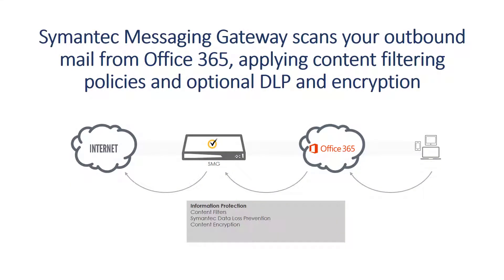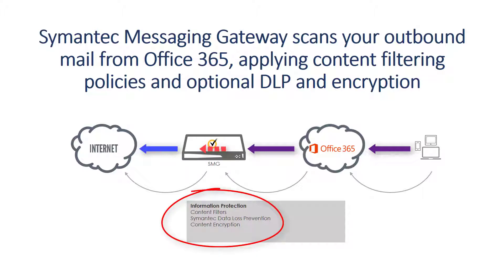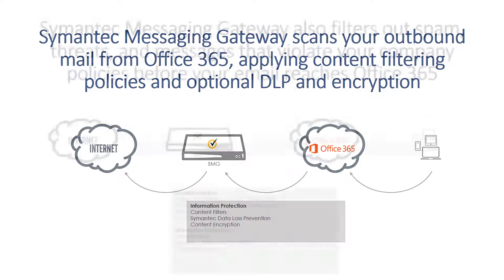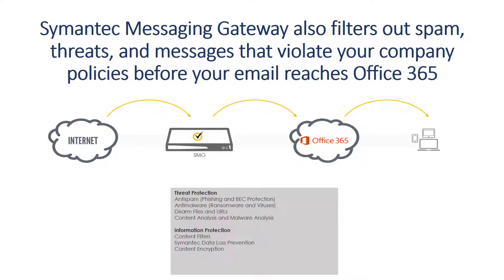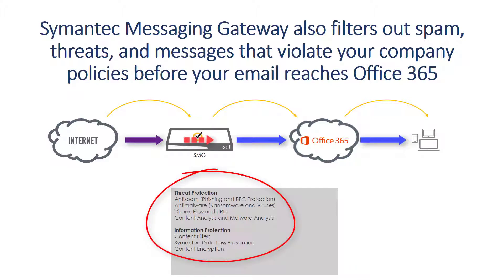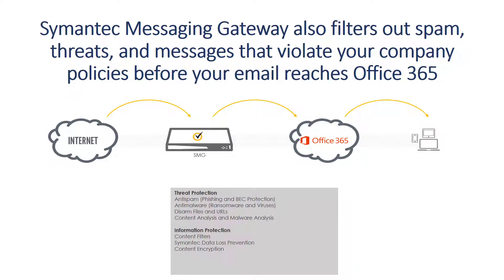Let's take a look at how your outbound mail is protected by Semantic Messaging Gateway when you switch to Office 365. Semantic Messaging Gateway scans the mail that your users send from Office 365, applying policies and filters to make sure outbound mail does not contain unacceptable content and that confidential information remains confidential. Semantic Messaging Gateway can also scan your inbound mail before it reaches Office 365, using the policies you already have in place to filter out spam, malware, advanced threats, and unacceptable content. We'll set up protection for inbound mail in another video.